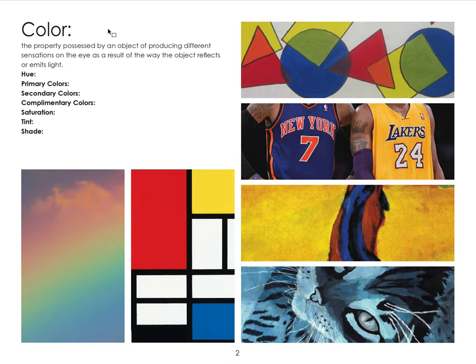Hue is defined as pure color taken from the spectrum as seen in the rainbow: red, orange, yellow, green, blue, indigo, and violet — ROY G BIV. Primary colors are red, blue, and yellow; secondary colors are violet, green, and orange. If you mix the primary colors you get the secondary colors.